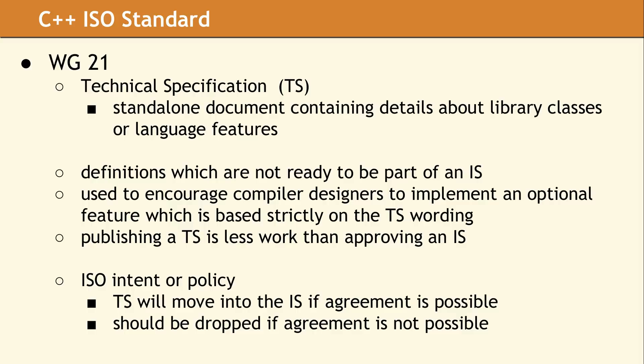The second type of document used in the C++ standard is called a technical specification, or TS. Publishing a TS can serve several different purposes. The most common use of a TS is to describe a modification to the C++ standard. These changes can be marked as experimental, so compiler designers can try out an implementation and see what happens and if it works.